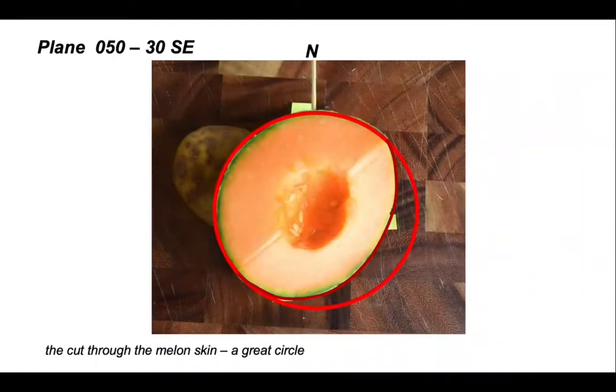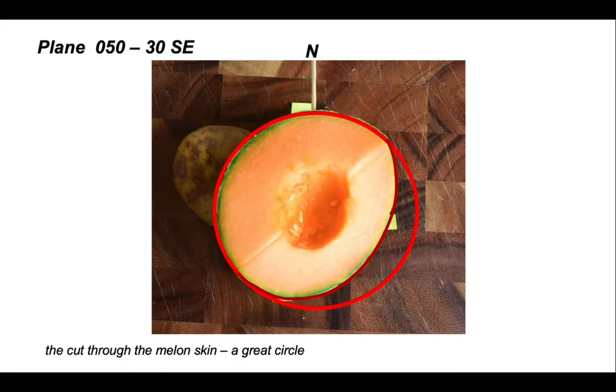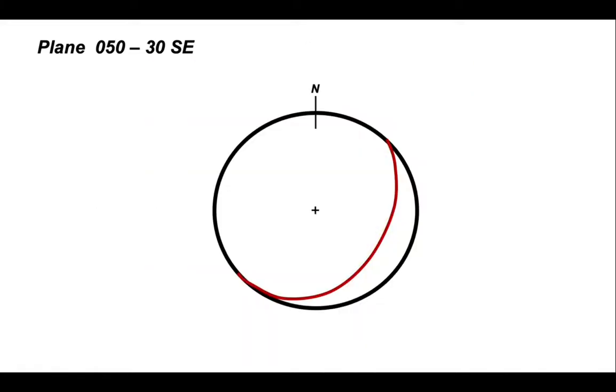Let's take the cardboard away and look at the cut that we've made in the melon. We've taken out a segment of melon to reveal the cut face. The arc of that cut as it intersects the skin of the melon is a great circle. That's the shape of the cut looking down on the cut as it intersected the skin of the melon. It represents a plane oriented 050 30 southeast.